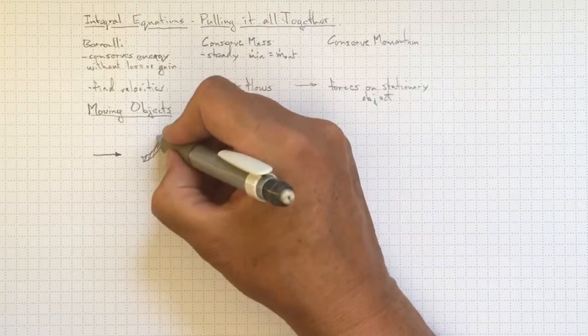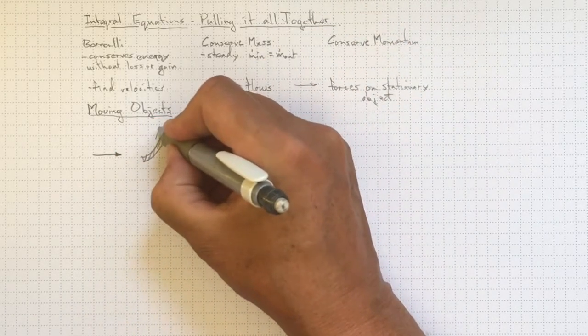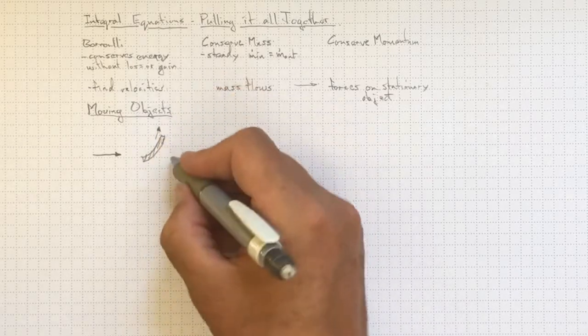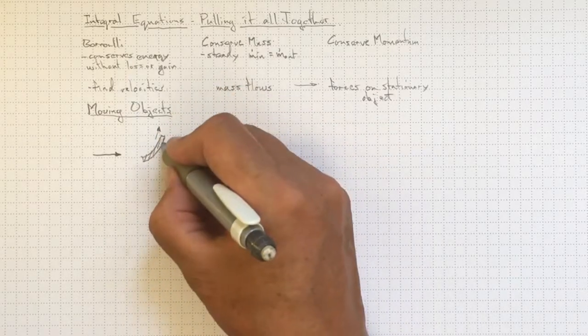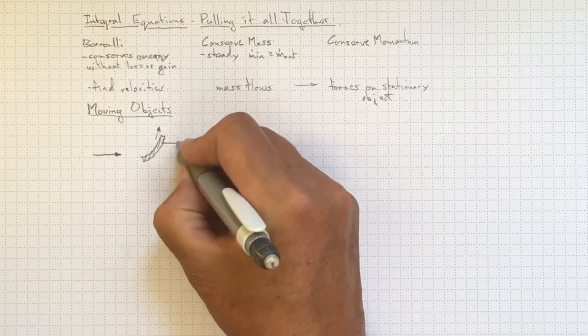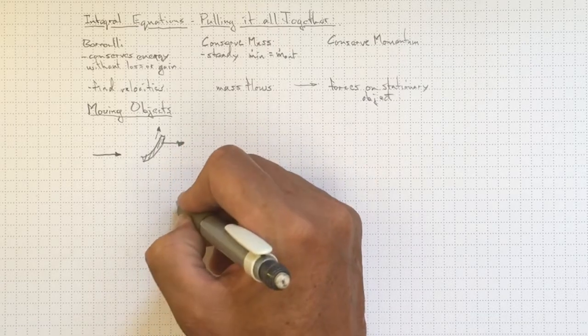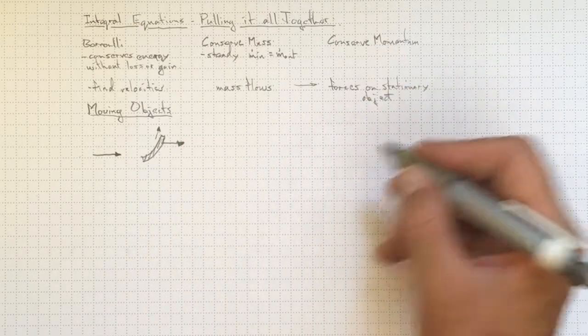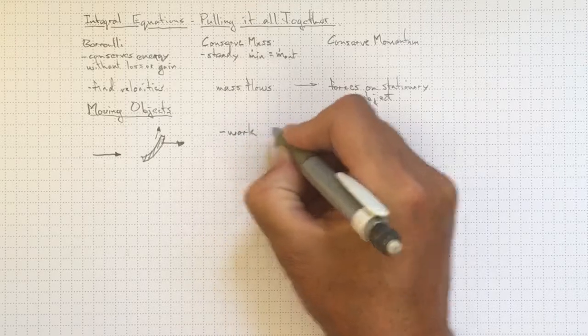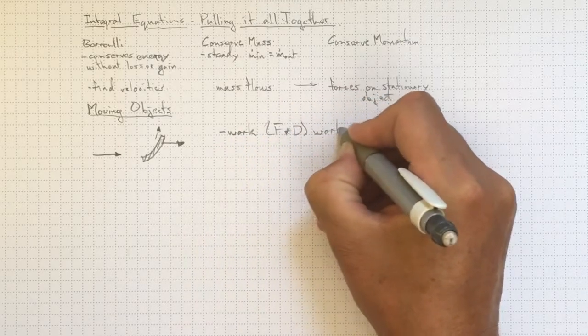and some of the kinetic energy of that flow is lost passing over the turbine blade and goes into work that's done on the turbine blade as it moves along at some velocity. With that moving target, there's work done.